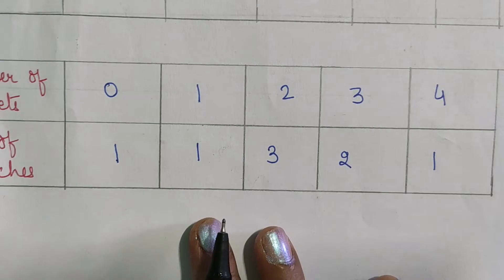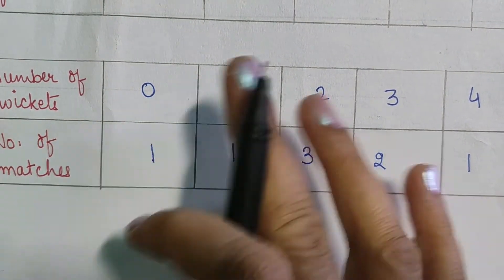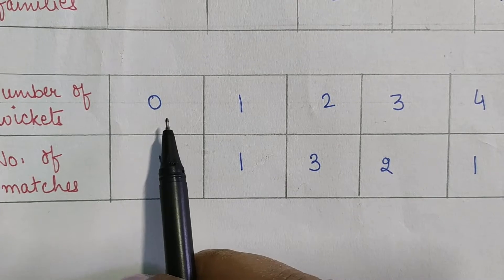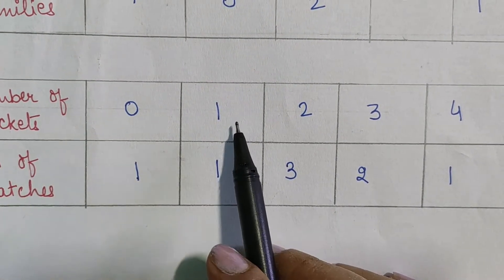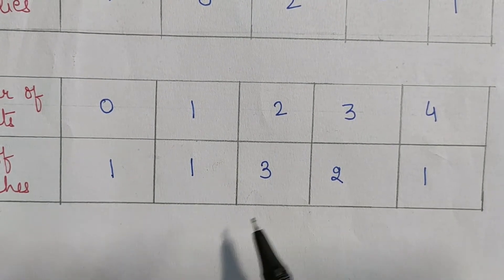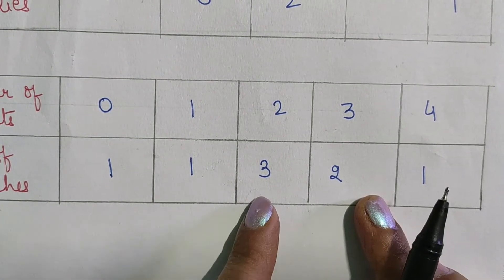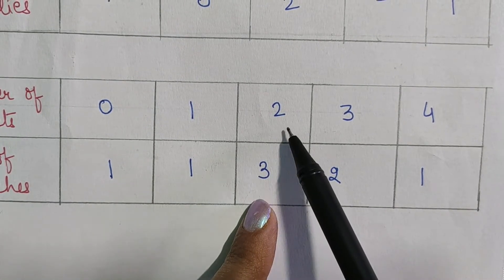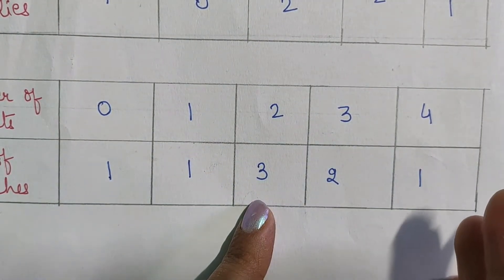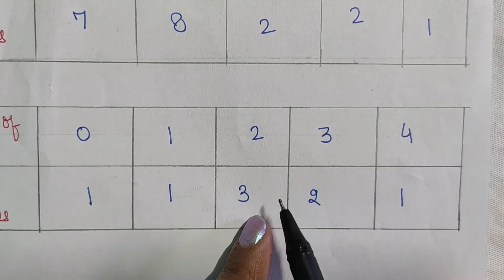Let's look at this table, which shows the number of wickets taken by a player in a number of matches. Zero wickets were taken in one match, one wicket in one match, two wickets in three matches. The maximum frequency here is three, so the mode is two — two wickets were taken the most, in most of the matches.